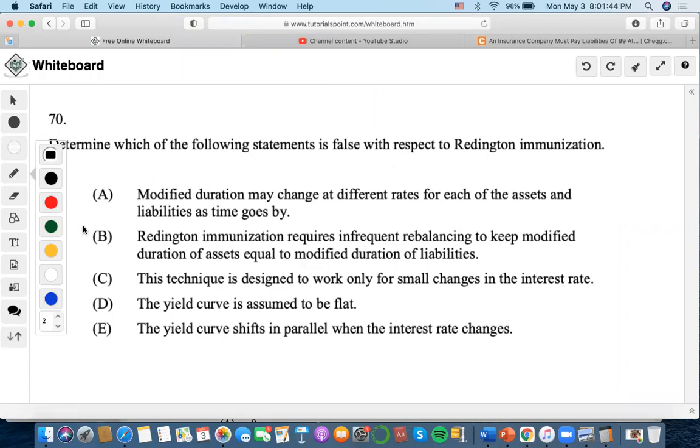Well, the first thing that we want to go over is what is Redington immunization and what is full immunization, right? So both of them have the first same rule that present value of assets will always have to equal present value of liabilities.